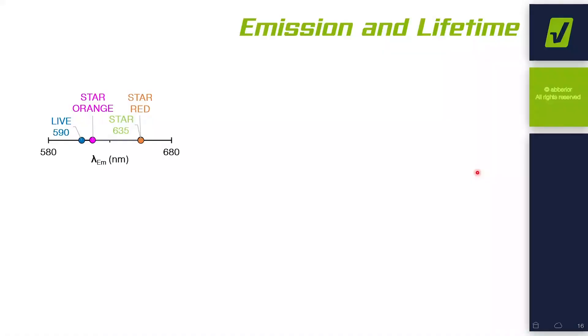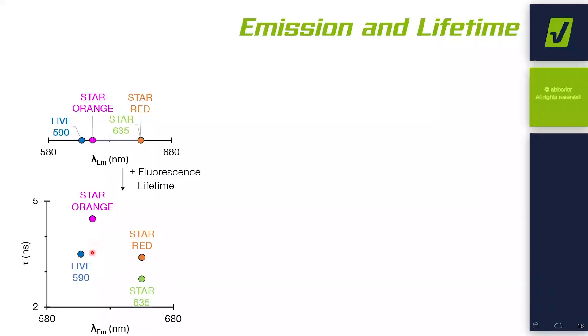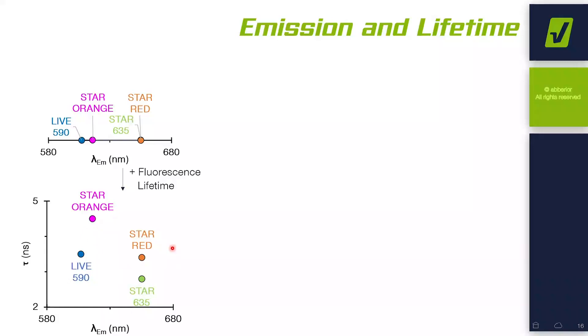With spectral information alone, we are quite limited. Additionally to the spectra, we can also use a second piece of information: the lifetime of our fluorophores. Just by spectra, we can distinguish red dyes from orange dyes, but we are not able to distinguish two orange dyes from each other. Adding the lifetime makes it quite easy — we can now distinguish both orange dyes from each other, and both red dyes from each other. For this, we are using our new feature released quite recently: the TimeBow. Using a phasor plot and linear separation, we can separate the dye with a longer lifetime from the one with a shorter lifetime.